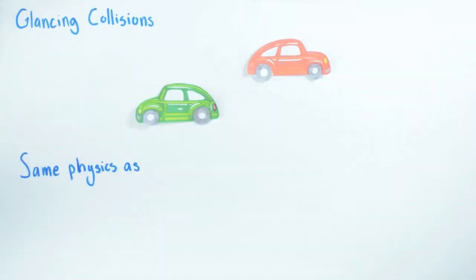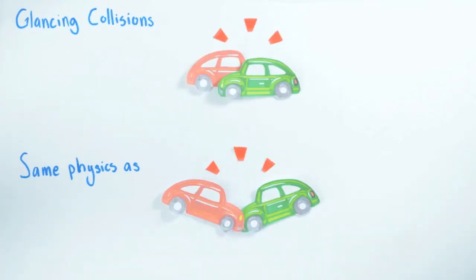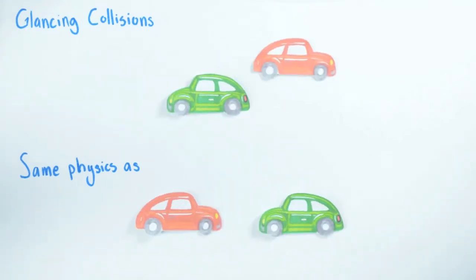We'll do an example of a glancing collision and we'll see that we already know all the physics we need to understand this problem. It's the same physics as in the head-on case, namely we have strong interactions between the objects during a relatively brief time interval.